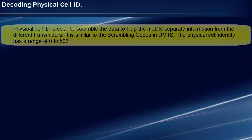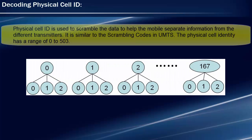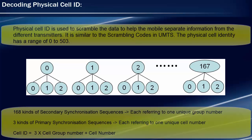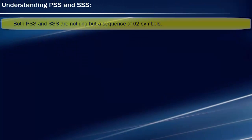Now we will understand how UE decodes the physical cell ID using PSS and SSS. In LTE, all cell identities are divided into 168 groups, each group having three cell identities, so finding a unique cell ID is a two-step process. The first step is to find the group of cell IDs, and the second step is to find one unique ID from that group. To enable this two-step decoding, there are 168 possible SSS sequences — each denoting a group of three cell IDs — and three PSS sequences — each corresponding to one unique cell ID within that group. Hence by decoding the unique sequence of SSS and PSS, UE can easily decode the unique physical cell ID.